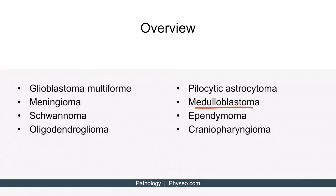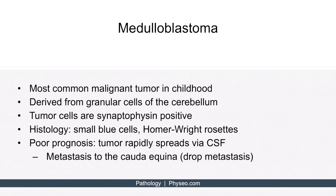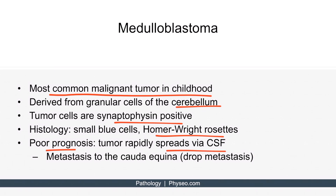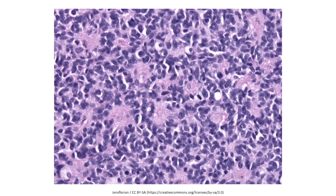Let's move on to discuss medulloblastoma. This is the most common malignant tumor in childhood. It's derived from the granular cells of the cerebellum, which originate from the neuroectoderm, and the tumor cells are synaptophysin positive. Small blue cells with Homer Wright rosettes can be observed on histology. Medulloblastoma has a poor prognosis because the tumor rapidly spreads via CSF. When it metastasizes to the cauda equina, it's called drop metastasis. Here's a histological image of small blue cells with Homer Wright rosettes — notice the grouping of these small blue cells around the central region.